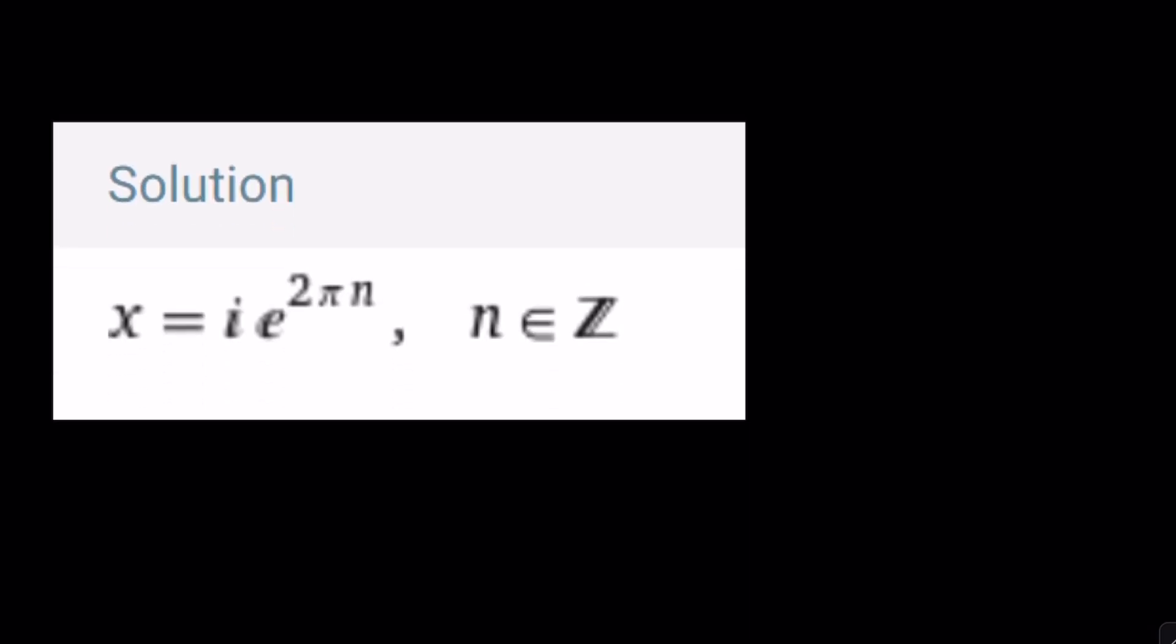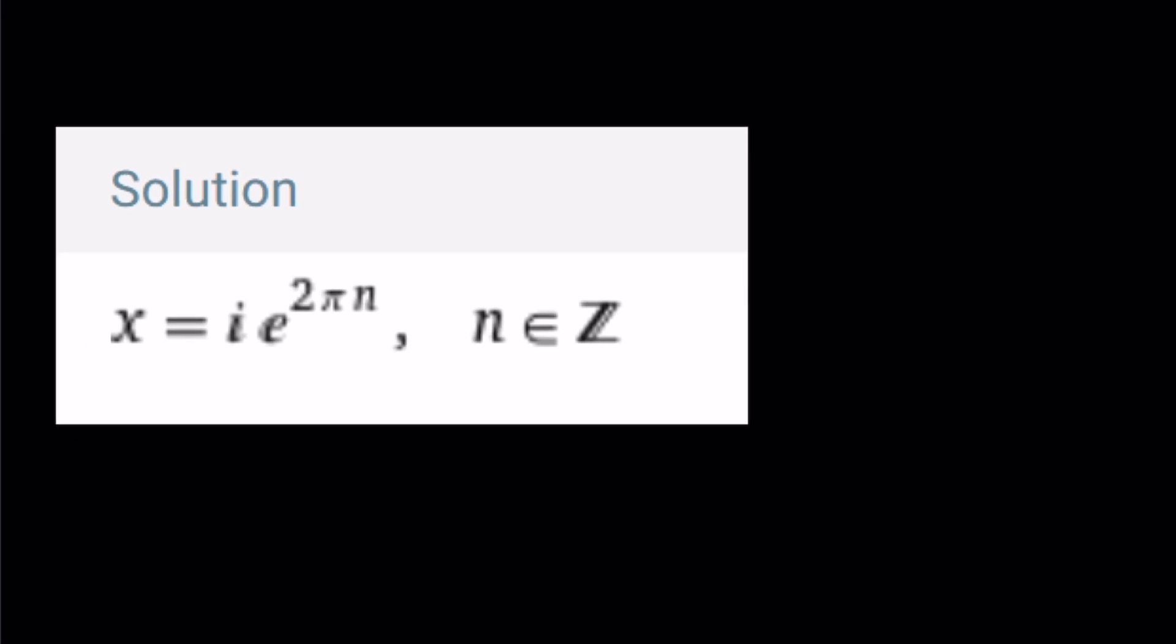Let's see what Wolfram Alpha says. Wolfram Alpha gives us a different answer: i·e^(2πn). Let me tell you why that's the case. If you just raise x to the power i,